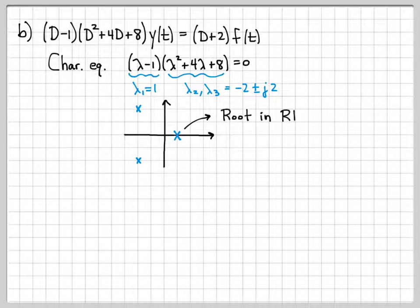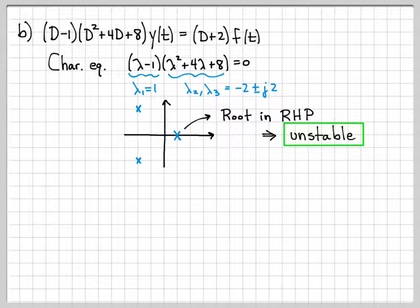Well, that's a problem because this is a root in the right-half plane. We have a root to the right side of the imaginary axis. If we have a root to the right side of the imaginary axis, that is going to be an unstable system. This is going to have a response that blows up as a function of time. So this system is not stable. It's unstable.